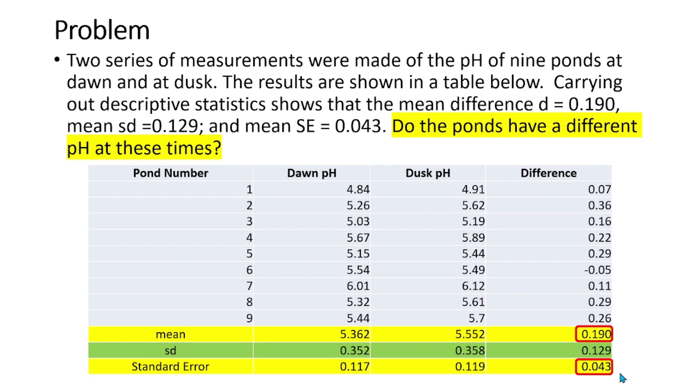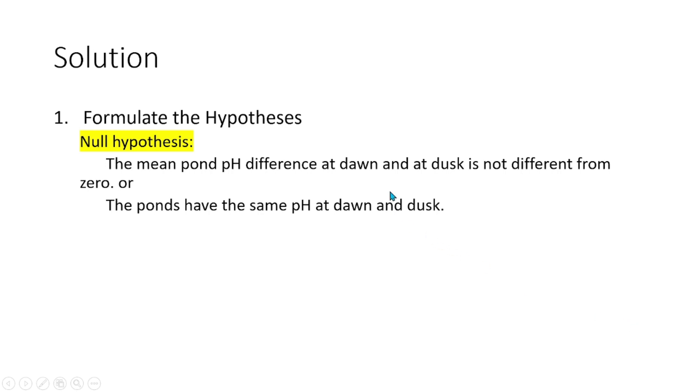Our first step in solving the problem is formulating the null and alternative hypotheses. Our null hypothesis can be stated as follows: The mean pond pH difference at dawn and dusk is not different from 0. Alternatively, the ponds have the same pH at dawn and dusk.